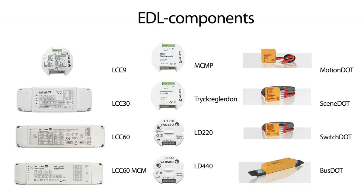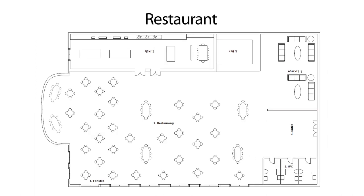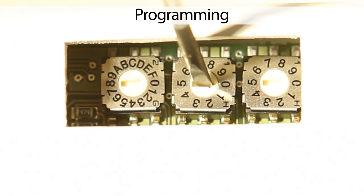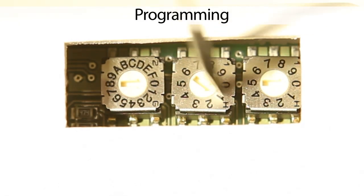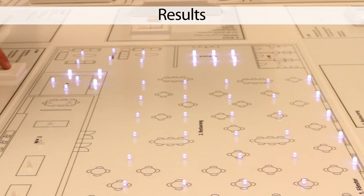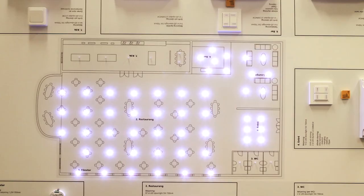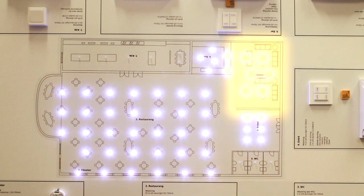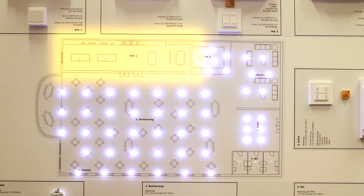The demonstration includes the lighting control functions, the EDL components, the restaurant, easy manual programming of lighting control with DALI, and finally an overview of the results. The demonstration is straightforward and easy, and I will use a light board as the easiest possible way of explaining what I am talking about. Let's go!